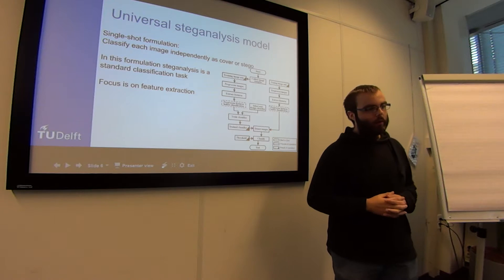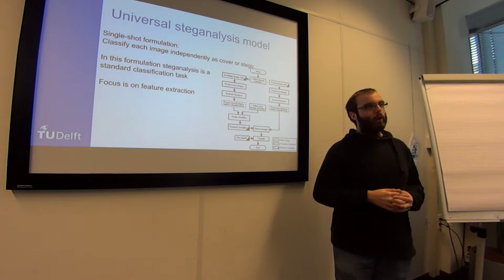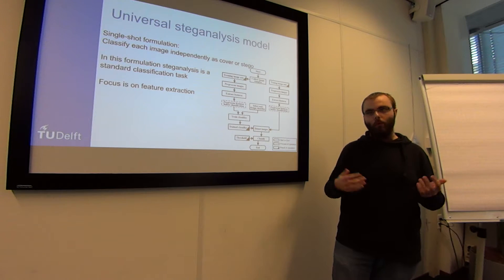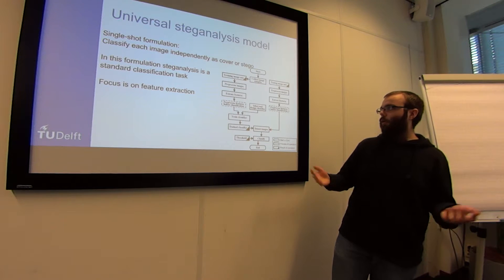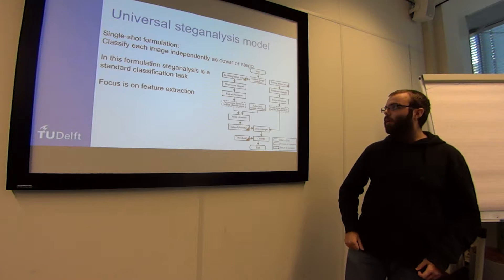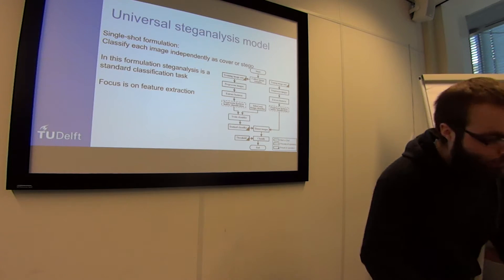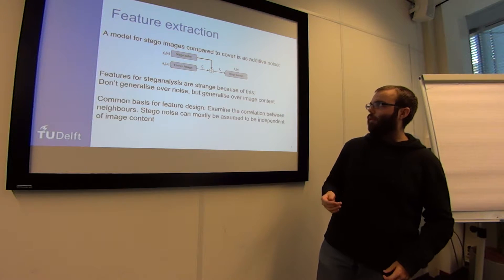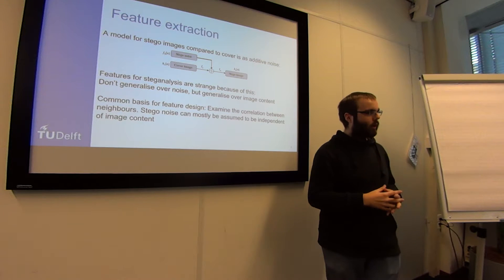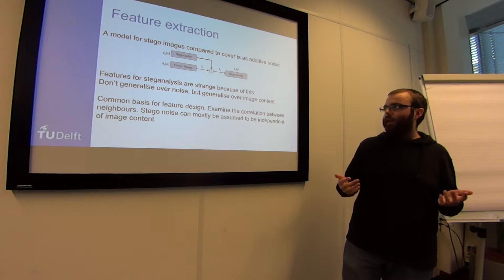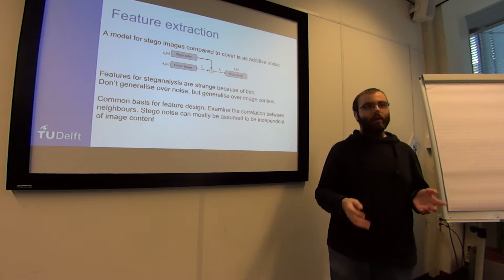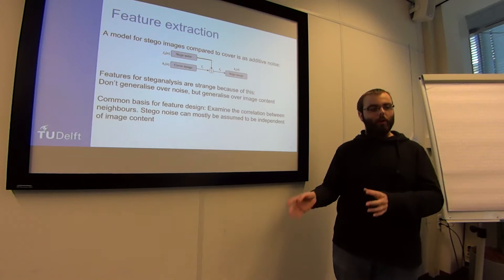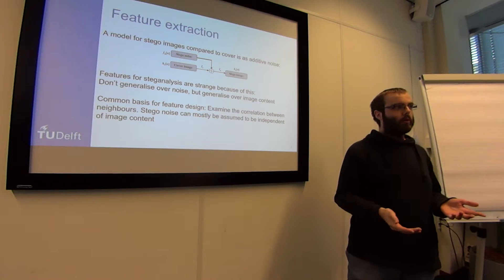The general model for universal steganalysis is a single-shot formulation — basically the same as regular image classification, where you get one image and classify it as either a cover or a stego image. The key difference is in the feature extraction stage. If you model the steganalysis process as taking a cover image and adding stego noise to obtain a stego image, then to identify whether this has happened, you want features that generalize over image content — you want to ignore the content and look at the noise, which is pretty much the opposite of normal image classification.